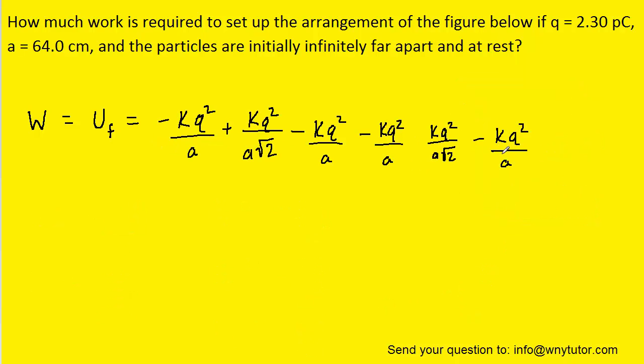It's a bit of a lengthy equation, but maybe what we could do, if we look carefully, is factor out a common factor. Now each term has a kq squared, as well as an a, so let's factor that out. We could then combine the negative ones, as well as the one over root twos.